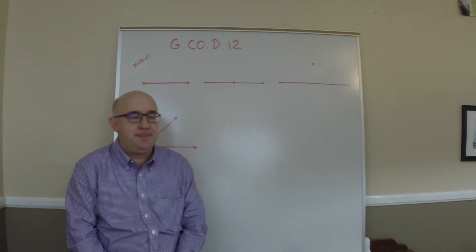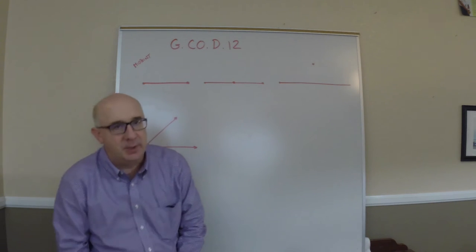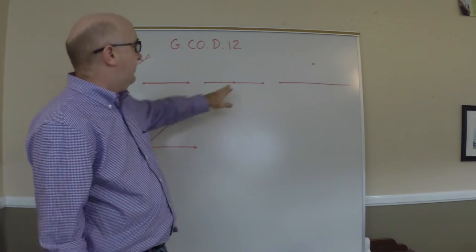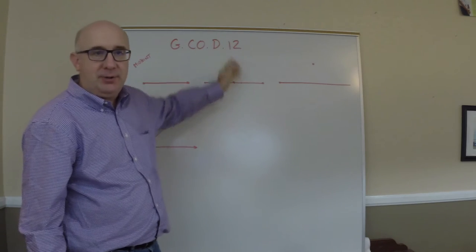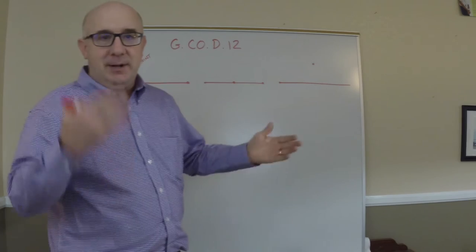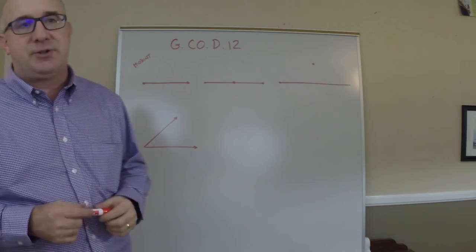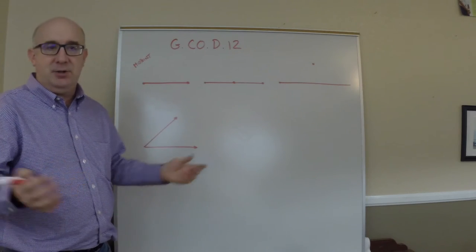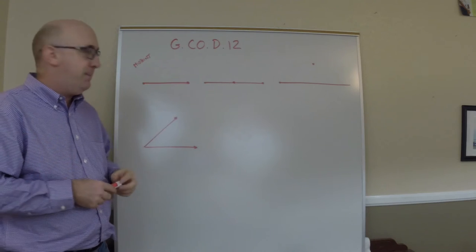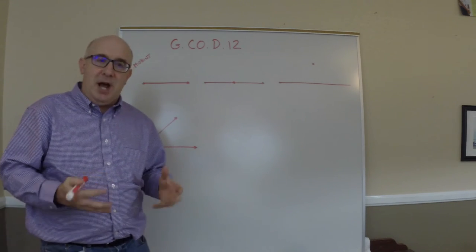Let's talk constructions for a little bit. There are a lot of constructions that we do right at the very beginning of the year: we are given a segment and we find the midpoint, we are given a point on a line and asked to do a perpendicular through it, we're given a point not on the line and we're asked to find a perpendicular through it, we want angle bisectors. Typically we just say this is how you do them and hope that students just pick it up. I want to talk about the underpinning things going on behind the scenes to make these constructions work.